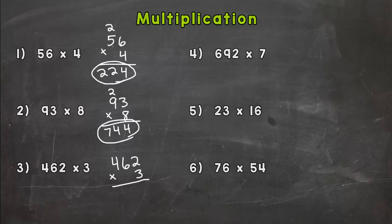So we start with 3 times 2, which is 6. Then we do 3 times 6, which is 18, carry the 1. Next we do 3 times 4, which is 12, plus that 1 is 13. So our product is 1386.